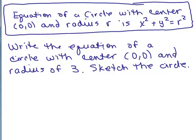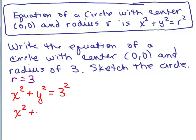So the equation of a circle with a center of (0, 0) and radius R is x squared plus y squared equals R squared. Here's our first problem: write the equation of a circle with center (0, 0) and radius of 3. Since it's centered at the origin, we simply write x squared plus y squared equals R squared. The radius is 3, so we write x squared plus y squared equals 3 squared, or x squared plus y squared equals 9. This is called the standard form. The nice thing about writing it as 3 squared is it's easy to see the radius, but usually you'll see it written as x squared plus y squared equals 9.